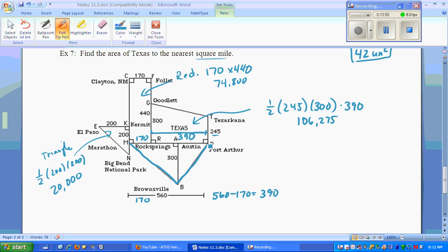And last but not least, I would treat this as a big triangle. And this triangle is half. Base, to me, is the 560 times the height, which is 300. Half of that, 84,000.